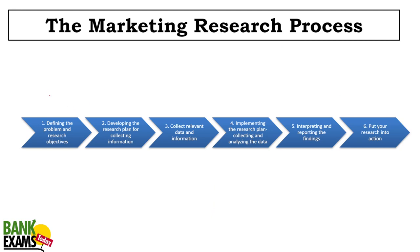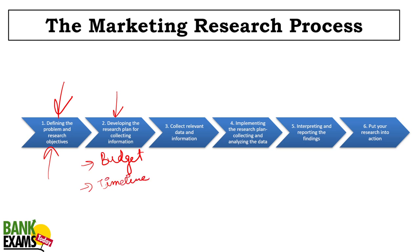The research process starts with defining the problem — for example, how much sugar should be in a Coca-Cola can? Should we increase the sugar content or not? Then you develop a research plan for collecting the information: what is the budget, what is the timeline? Next, you collect the relevant data and information — this is the most important part and very exam-relevant. Various methods and approaches are used to collect data from the population or target market. You then implement the research plan, analyze the data, and interpret it.